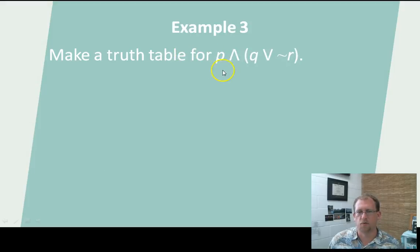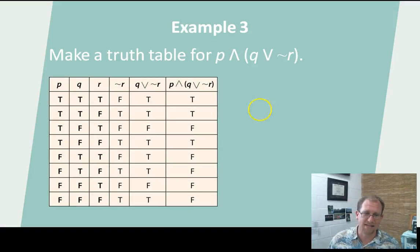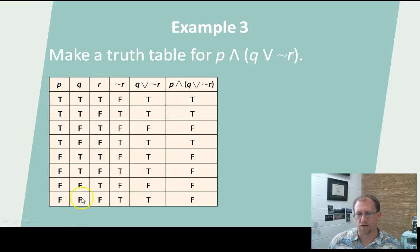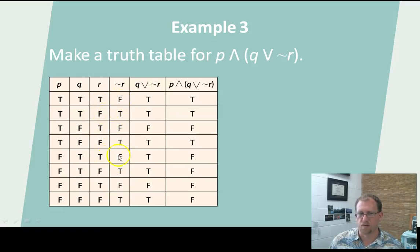Let's make a truth table for P∧(Q∨¬R). Parentheses work the same way in truth statements as they do in algebra. I have P, Q, and R — all of which can be true or false — so I have eight conditions. The columns for P, Q, R are set up as: true, true, true, true, false, false, false, false; then true, true, false, false, true, true, false, false; then true, false, true, false, true, false, true, false. First, I look at ¬R. If R is true, then ¬R is false. If R is false, then ¬R is true. I continue that all the way down the column, alternating.